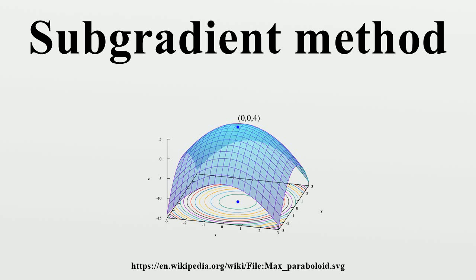Subgradient methods are iterative methods for solving convex minimization problems. Originally developed by Namiyas, Shor, and others in the 1960s and 1970s, subgradient methods are convergent when applied even to a non-differentiable objective function.